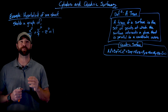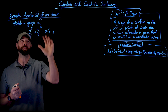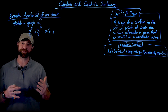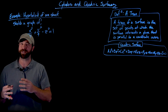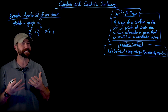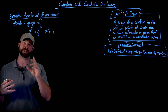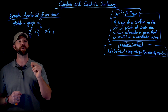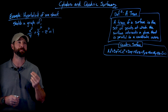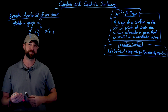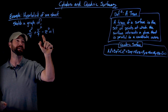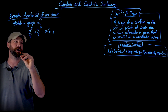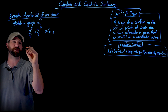Our first example is a hyperboloid of one sheet. You'll have to wait until the end of the video to understand what it means to be one sheet versus two sheets, but it relates to the idea of continuity. We're looking to sketch a graph of x² / 4 + y² / 9 − z² = 1. We have this minus z² term, and we'll see what effect that has on the graph.